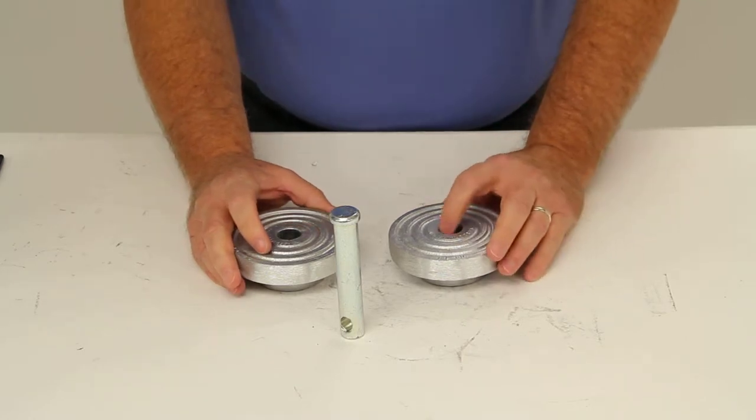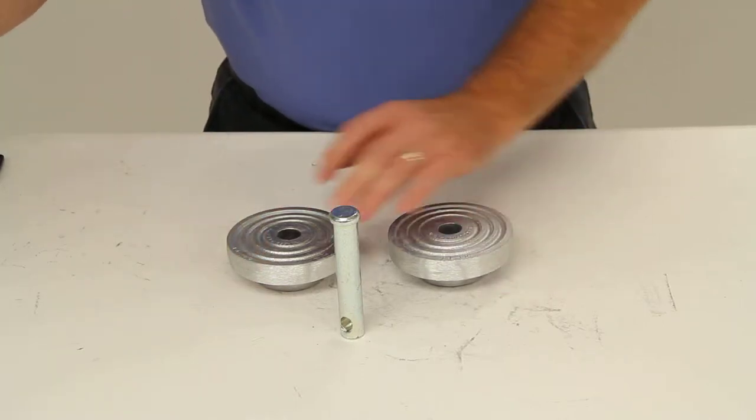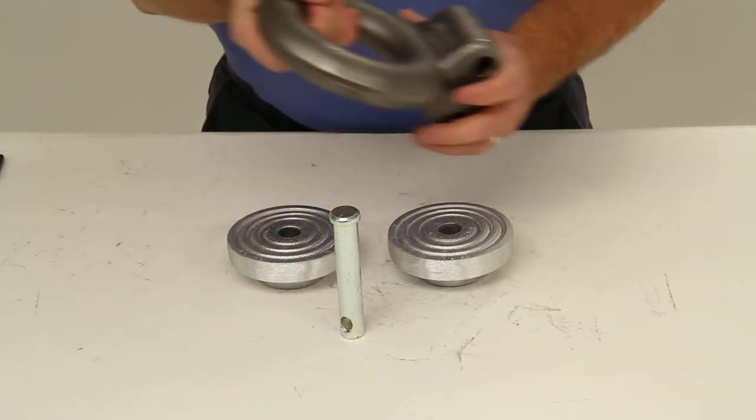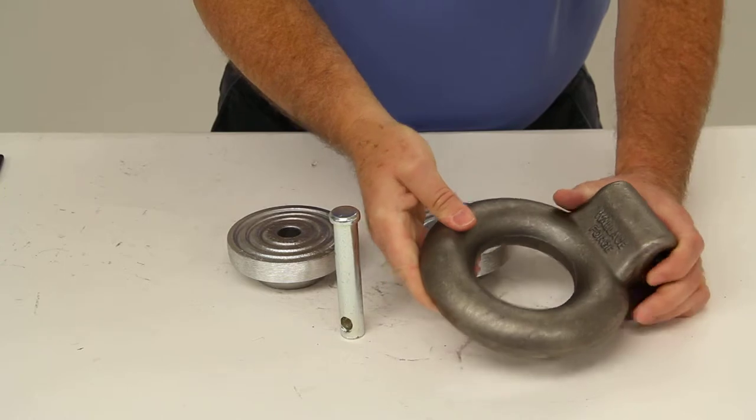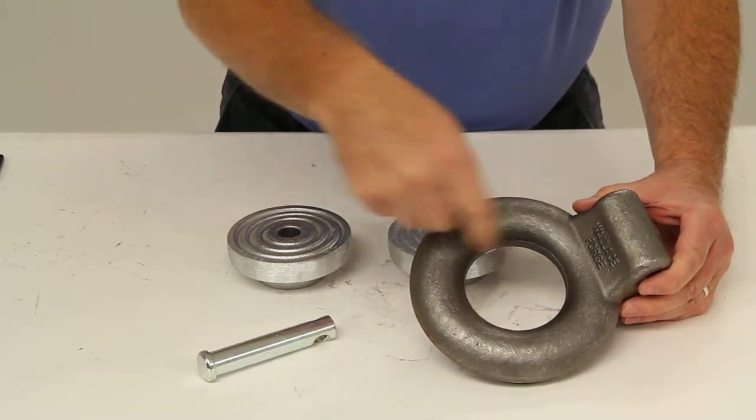Now this will fit lunette rings with two and a half inch or three inch inner diameter openings. Just to give you an idea, I have a sample of a lunette ring here. This one happens to be a three inch opening.